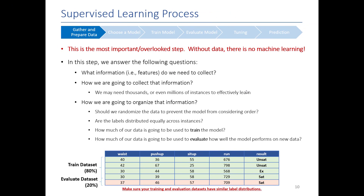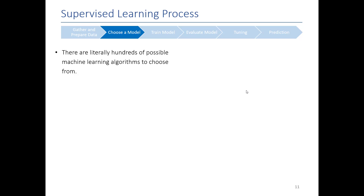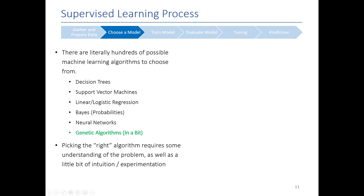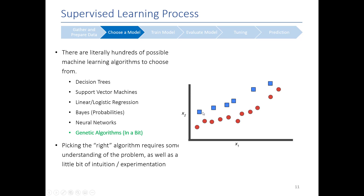Now that we've gathered and prepared our data, the next thing is to choose a model. This is more art than science because there are hundreds of possible machine learning algorithms to choose from. Picking the right algorithm often requires understanding something about the problem and having some intuition. For example, if I want to differentiate between blue squares and red circles, a linear algorithm would be good for cutting the data into two pieces. But algorithms that shouldn't work well often end up working really well, so we have to try a few and see which one works.